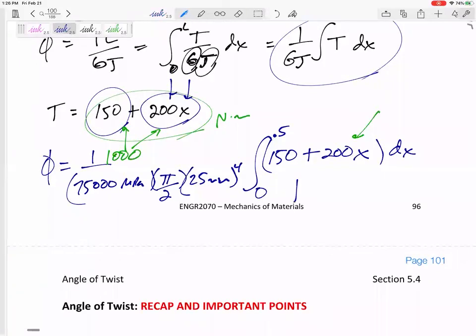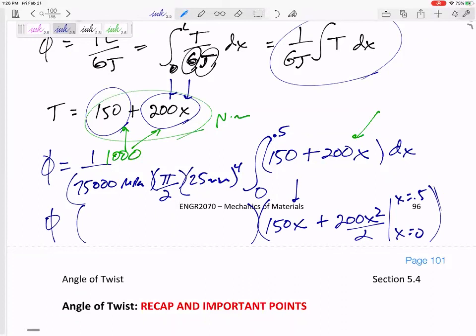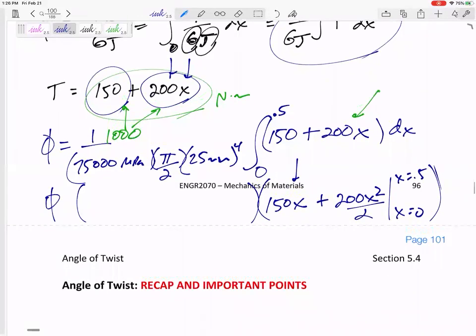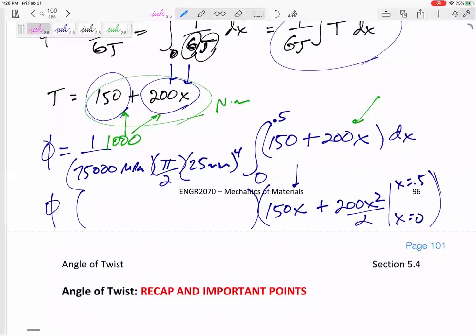But this would be, what is this integral? 150X, 200X squared over two, as X goes from zero to 0.5. Times those numbers right there: 75,000 pi by 2, R to the fourth. I actually do have the final answer. The angle of twist 0.00217 radians.